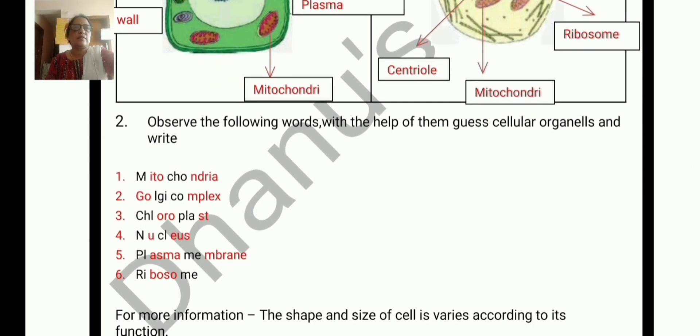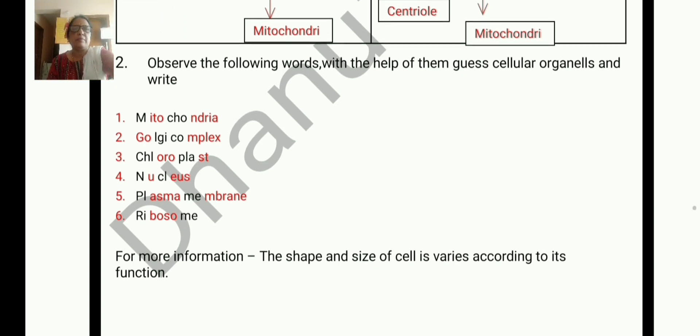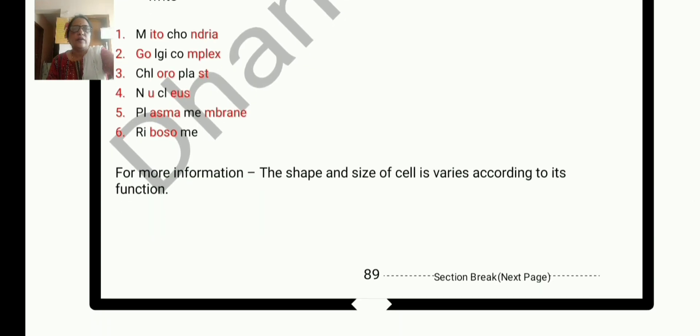Observe the following words. With the help of them, guess cellular organelles and write. So there you have missing letters highlighted. Mitochondria, Golgi complex, chloroplast, nucleus, plasma membrane, ribosome. For more information, the shape and size of cell varies according to its function.